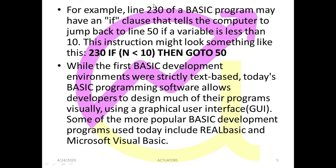Let's look at an example. Line 230 of a BASIC program may have an IF clause that tells the computer to jump back to line 50 if a variable is less than 10. So line 230 contains a particular code that looks like: IF N is less than 10, then go to 50. And 50 is the line to which we jump if the variable is less than 10.